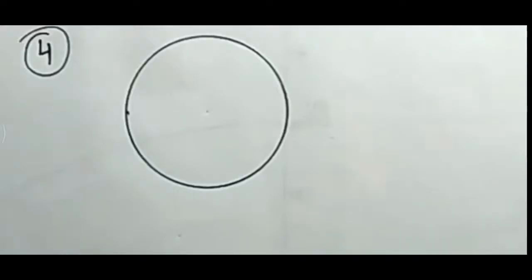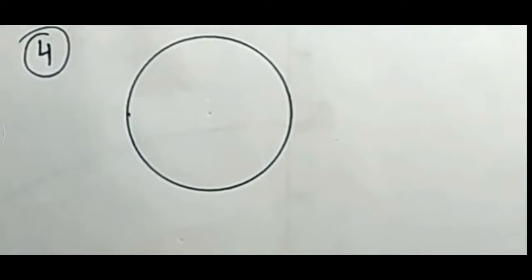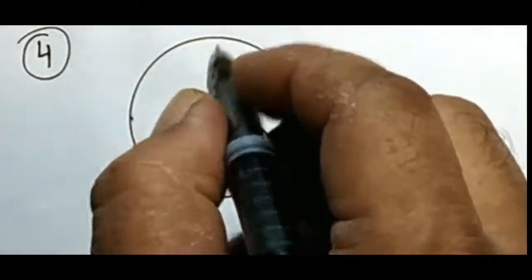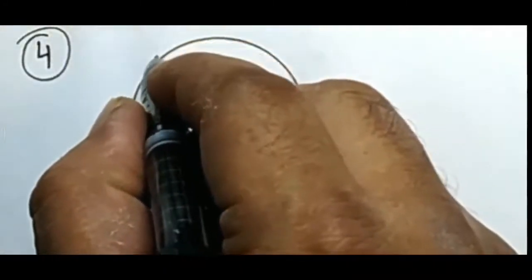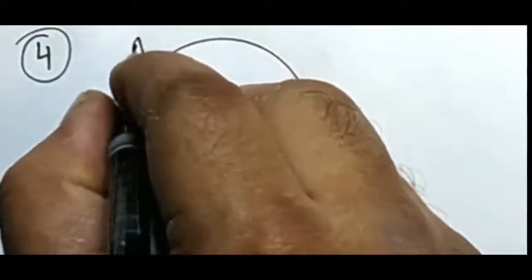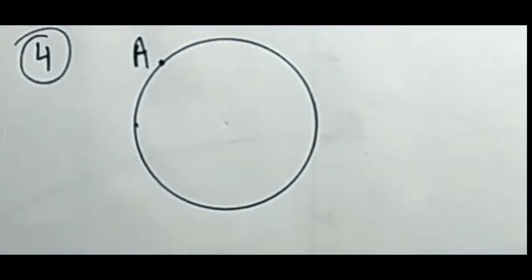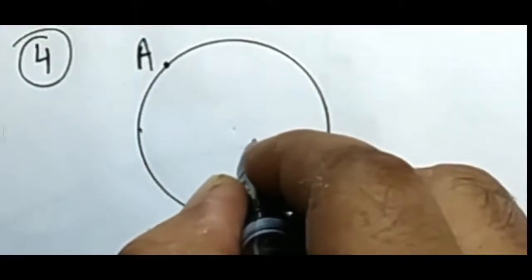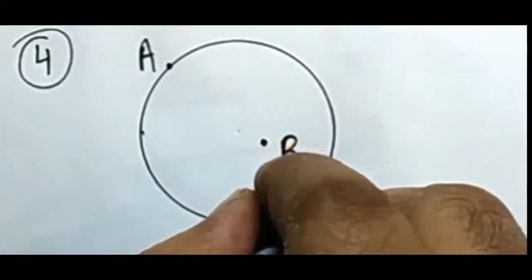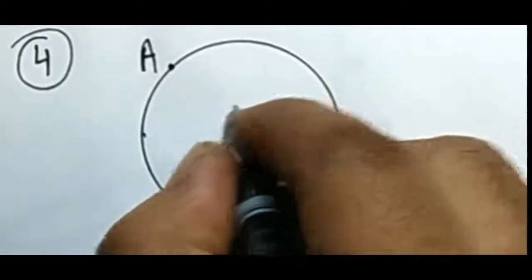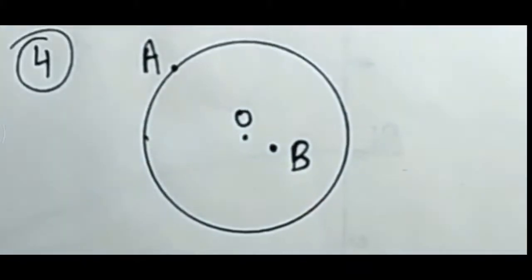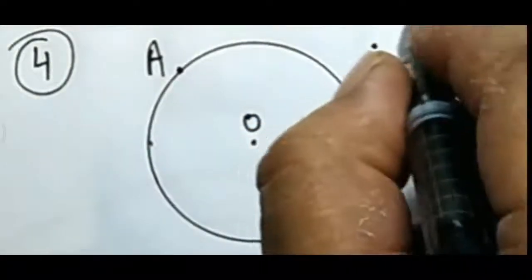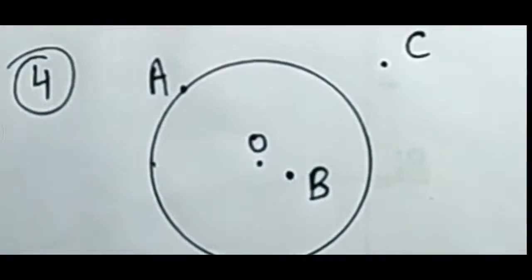Let's draw this. Draw a circle with any radius since it is not mentioned. I have drawn a circle. Mark point A on the circle. Point B is in the interior of the circle — mark point B inside the circle. This is O, the center of the circle. Now C is in the exterior of the circle — I have made C exterior. Here you can see C is outside the circle.